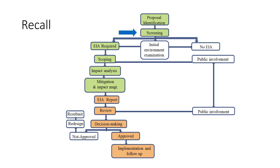Screening has a very critical theoretical component: the scientific criteria for screening. Through your group work assignment, you picked individual projects and used the scientific criteria to decide whether a project requires EIA or not, and if required, what level — comprehensive or preliminary assessment. The projects you chose included a slaughterhouse, dairy production, pharmaceutical industry, and small reservoirs.